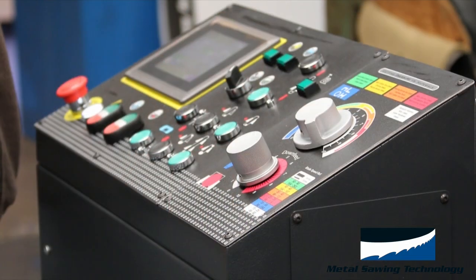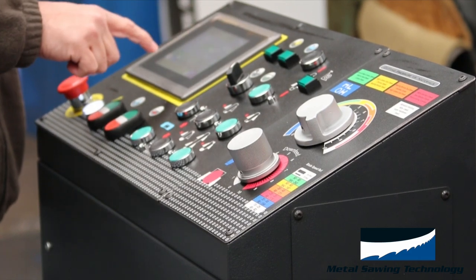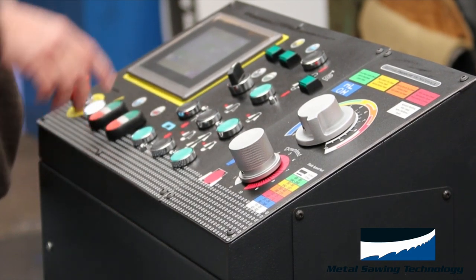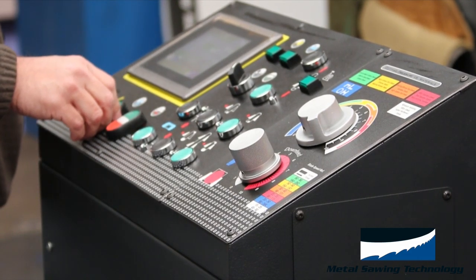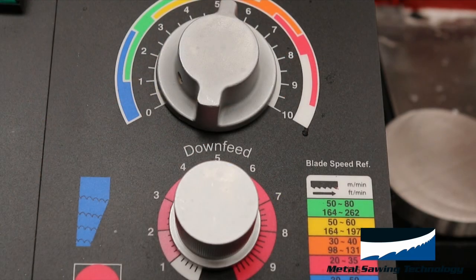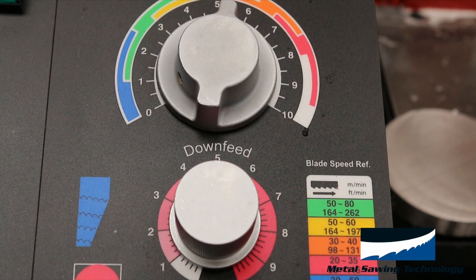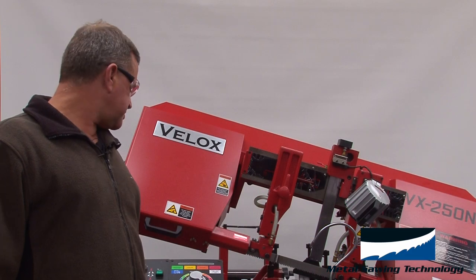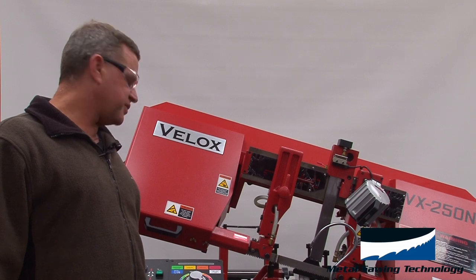We're going to cut this stainless at 137 surface feet per minute. We're going to go to our scale, our digital readout, and program in the band speed. We've already preset our descent at 3 on our down feed for the Velox saw and also for the pressure at a three and a half.